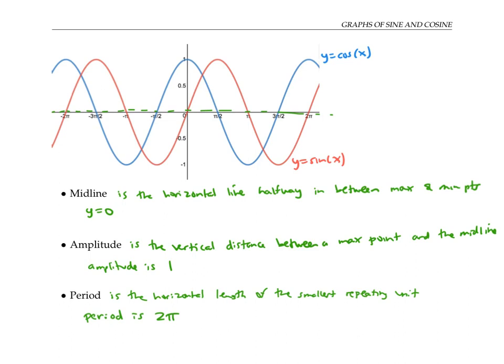Algebraically, we can write cosine of x plus two pi equals cosine of x, and sine of x plus two pi equals sine of x, to indicate that the functions repeat themselves over an interval of two pi and have a period of two pi.